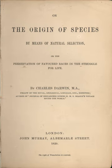Vestiges used evidence from the fossil record and embryology to support the claim that living things had progressed from the simple to the more complex over time. But it proposed a linear progression rather than the branching common descent theory behind Darwin's work in progress, and it ignored adaptation. Darwin read it soon after publication, and scorned its amateurish geology and zoology, but he carefully reviewed his own arguments after leading scientists, including Adam Sedgwick, attacked its morality and scientific errors. Vestiges had significant influence on public opinion, and the intense debate helped to pave the way for the acceptance of the more scientifically sophisticated Origin by moving evolutionary speculation into the mainstream.